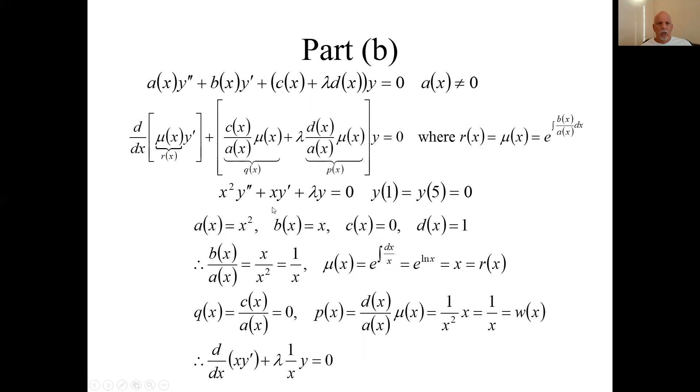What else do we need? q of x is c over A, which was 0. Well, let's see, p. p is d over A times μ, which is d over A, 1 over x² times the μ, which was x. d over A was 1 over x². μ is x, so we have 1 over x. That's our p, and that's also our weighting function for the orthogonality relationship.